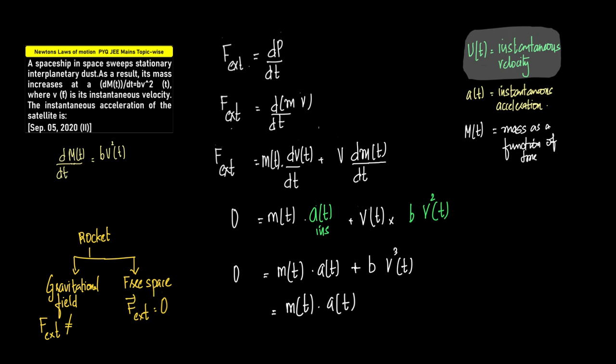In space, the external force acting on the rocket will totally be equal to zero, whereas in gravitational field f external will not be equal to zero. In fact, the f external acting in gravitational force is nothing but the force due to acceleration due to gravity, which is the weight of the rocket. So that component is not present in free space. So in free space, f external is equal to zero, which can replace this term as zero. And therefore what we have is m of t into d by dt of v(t).